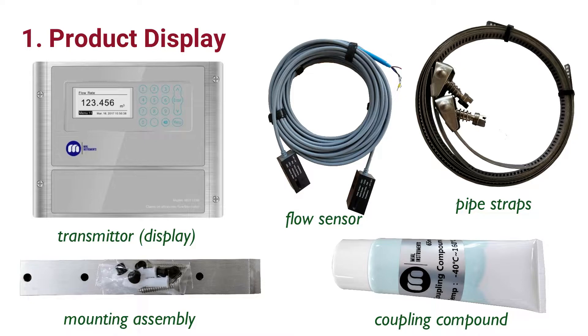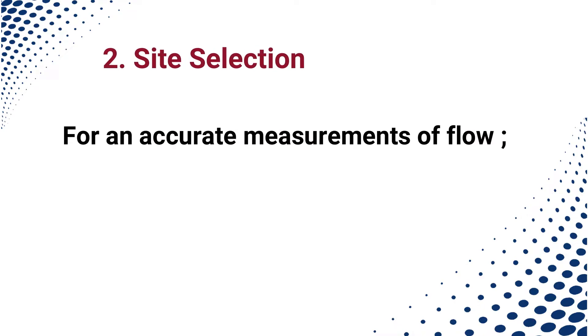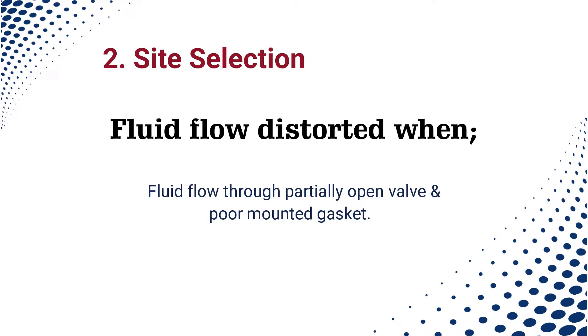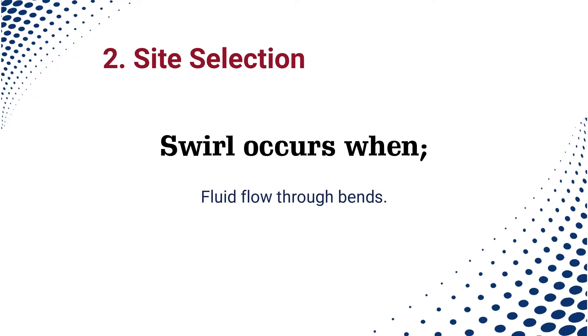For accurate measurement of flow, the fluid profile inside the pipe must be symmetrical and steady. Fluid profile distortion occurs when an obstruction such as a partially open valve or poorly mounted gasket partially blocks the pipe. Swirl occurs when the fluid flows through pipe bends. The swirl is far more difficult than distorted flow profile.